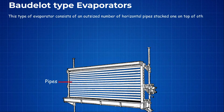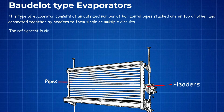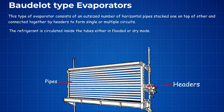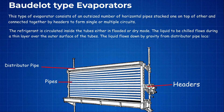The horizontal pipes are connected together by headers to form single or multiple circuits. The refrigerant is circulated inside the tubes either in flooded or dry mode. The liquid to be chilled flows through a thin layer over the outer surface of the tubes, flowing down by gravity from the distributor pipe located on top of the horizontal tubes.